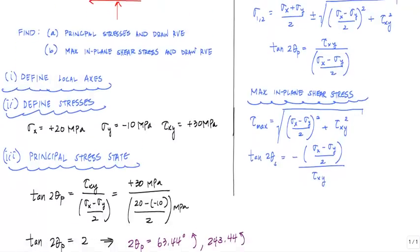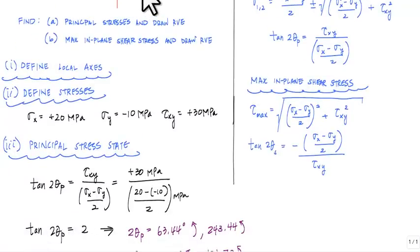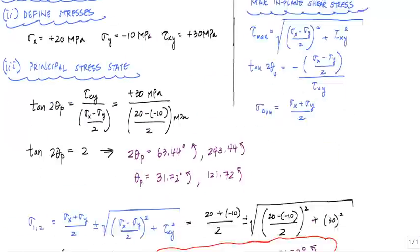The one thing to remember in the maximum in-plane shear stress state is that all the normal stresses going around the stress element is that sigma average is the normal stress on each face, which is just simply sigma x plus sigma y divided by 2. Let's go ahead and do that.